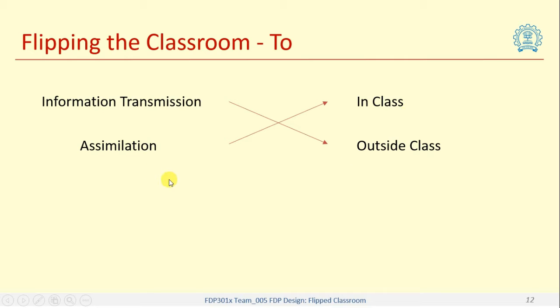So the reason for doing this, moving the information transmission to outside the class, is that with the help of technology it is easy to capture this information transmission and we can let students work on the lower cognitive levels such as what is a definition of something.